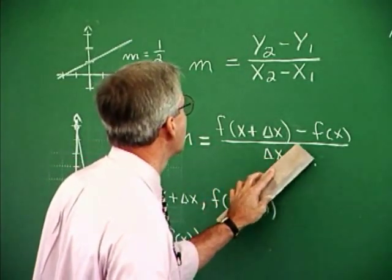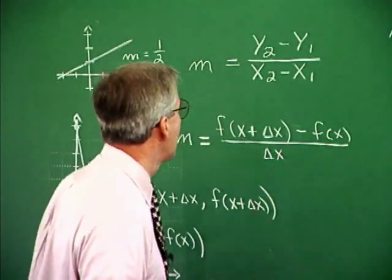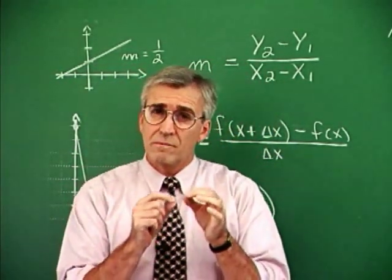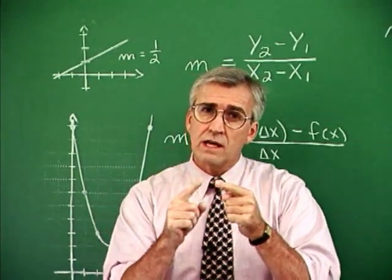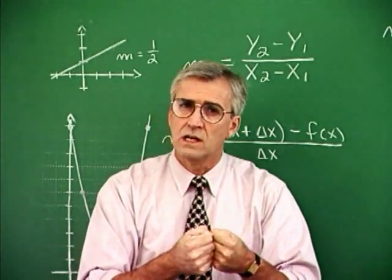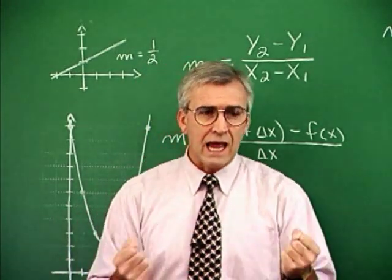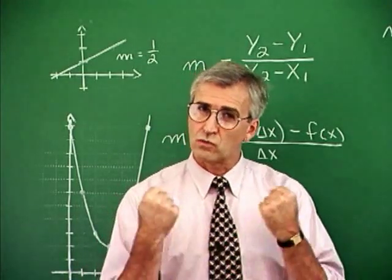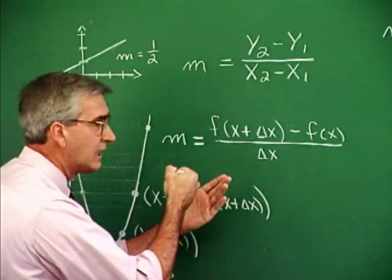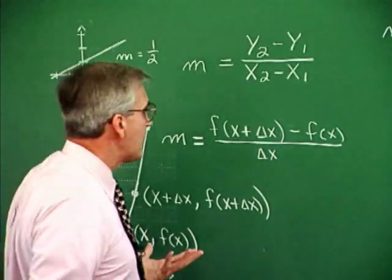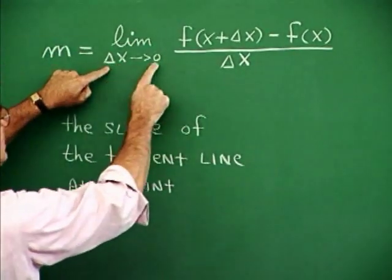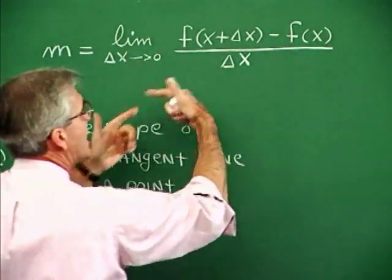Well, this kind of gives us an idea generally of what we want to do. But as delta x gets smaller and smaller and smaller, we're talking about making it littler and littler, make that distance from x very, very tiny, then the closer we get to x, the better the approximation of the slope of the tangent line. So we want the limit as delta x approaches zero. That's really what we're after to get the slope of the tangent line to be exactly the amount that we want it to be.